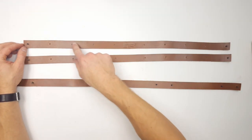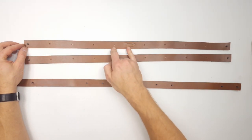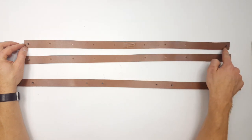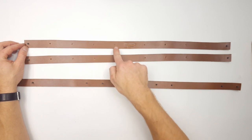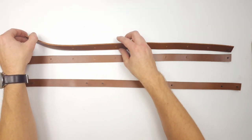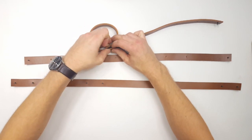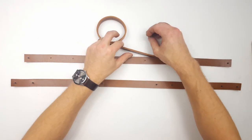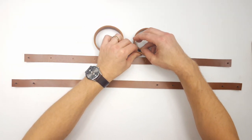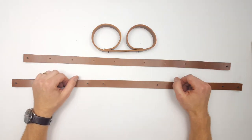Now on the shorter straps, these ones, we have one, two, three, four, five holes, and then the middle, and we have five holes again. What you need to do is take this rivet and fold it back so that it goes into the fifth hole, like so. There we go. And do the same on the other side.